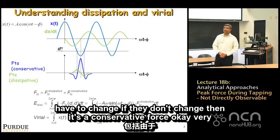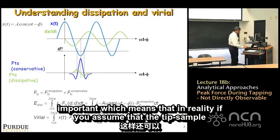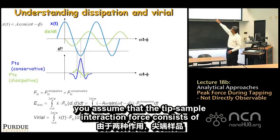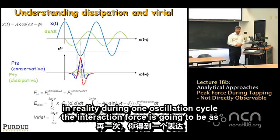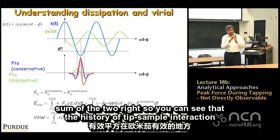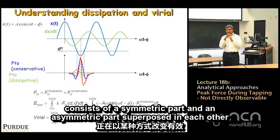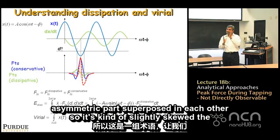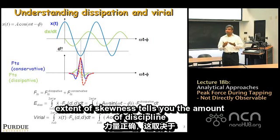In reality, the total tip-sample interaction force consists of both dissipative and conservative components. During one oscillation cycle, the actual interaction force is the sum of the two, shown as the dotted line — slightly skewed. The extent of skewness indicates the amount of dissipative interaction. If it is perfectly symmetric, there are only conservative interactions.